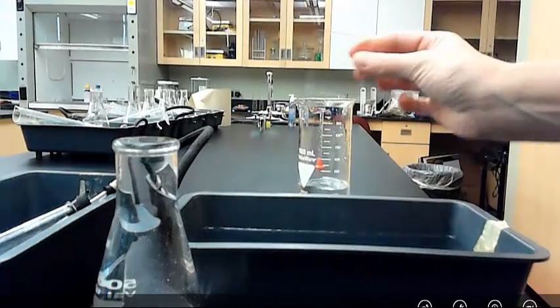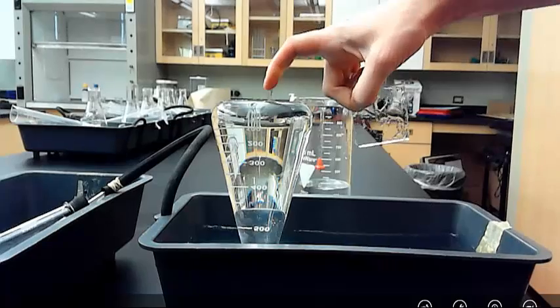So here's the key stuff that you need to be able to do. You're going to have a large Erlenmeyer flask. And your job is you're going to have to fill it all the way up with water. So you're going to fill it up to the tippy top with water. All the way up. And then you have a little glass plate. You're going to slide that glass plate over the top so that there's no air bubbles.